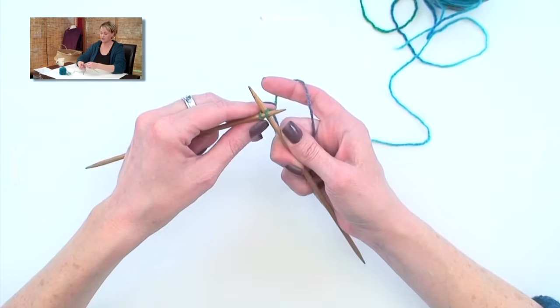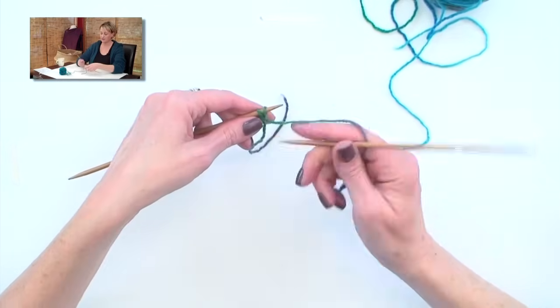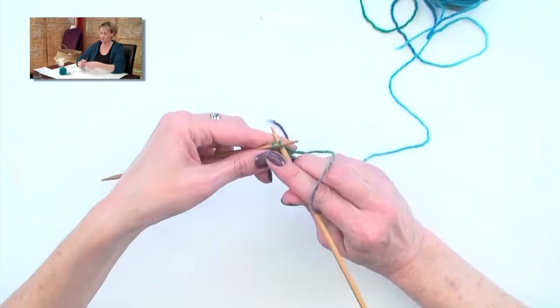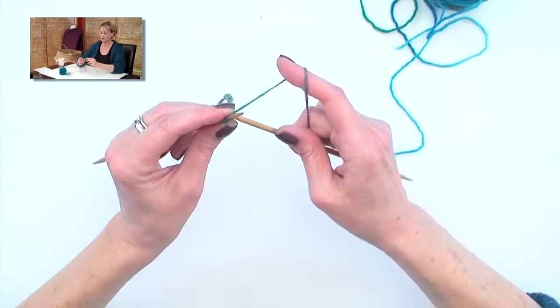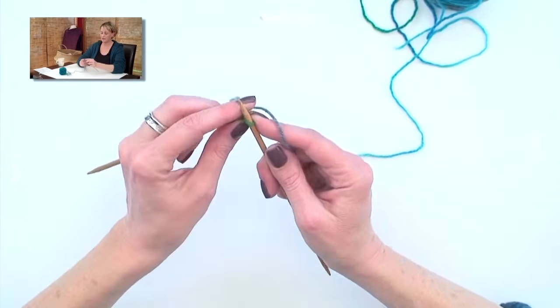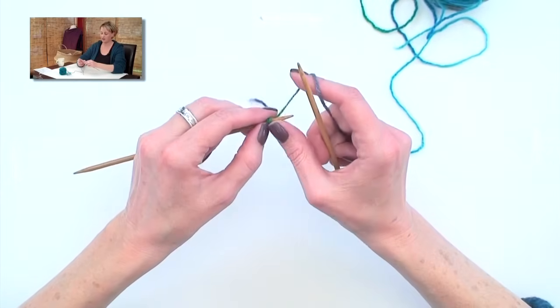I put my needle in between those two stitches. I come in from the bottom here, between the two stitches, wrap it and pull it through, twist it around, and up onto the left needle. That's the cable cast on.